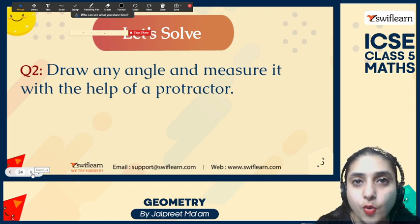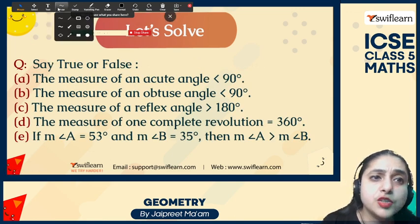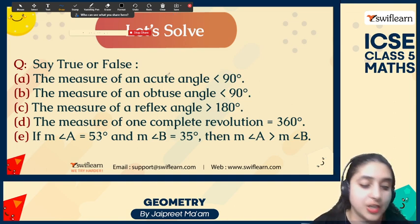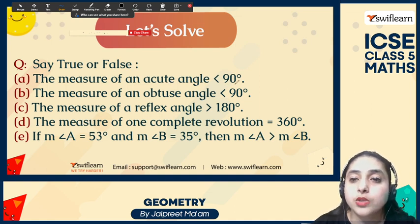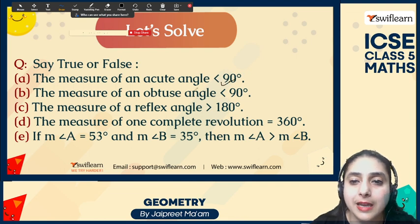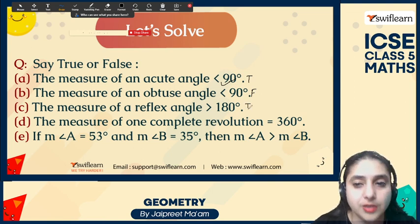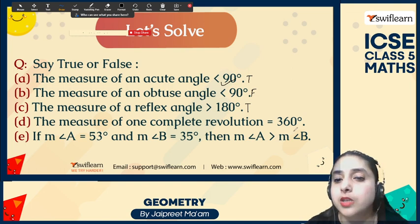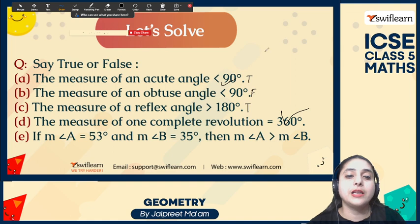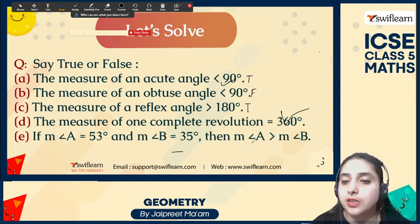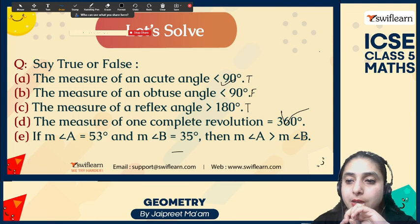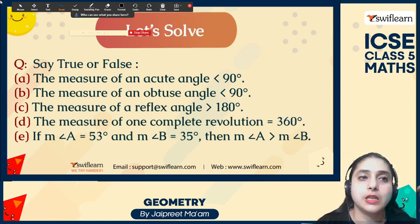Let's check whether these statements are true or false. The measure of an acute angle is greater than 90 — no, it's less than 90, so that is false. The measure of an obtuse angle being greater than 90 — that is true. The measure of a reflex angle being greater than 180 — that is true. One complete revolution is 360 degrees — correct. If angle A is 53 degrees and angle B is 35 degrees, then angle A is greater than angle B — that is correct.